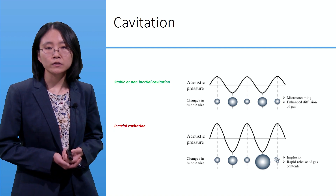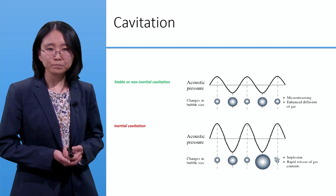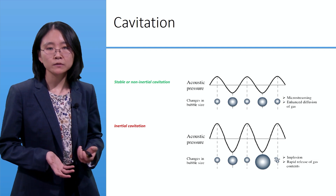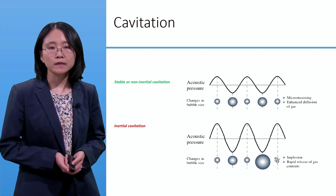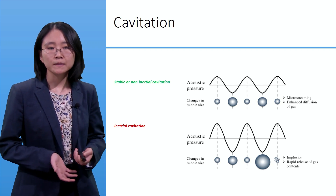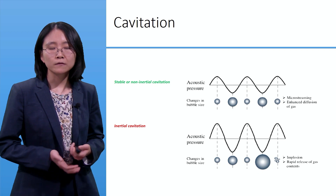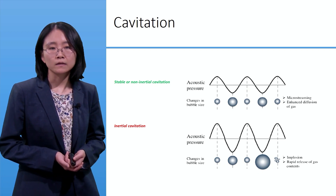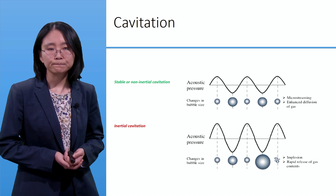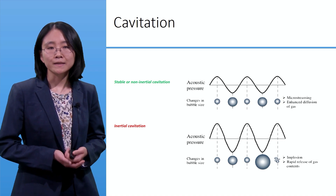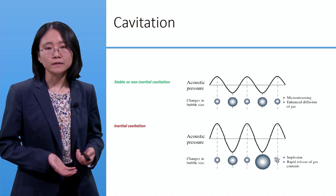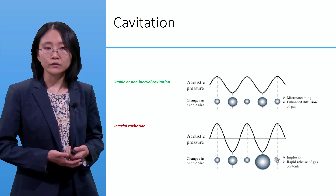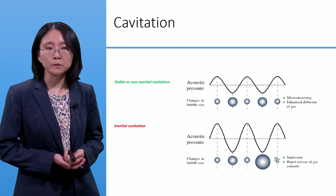Inertial cavitation describes the change in microbubble size that results in collapse, creating significant mechanical forces that can result in vascular injury. Essentially, this process is not desirable when we are trying to achieve controlled blood-brain barrier opening.